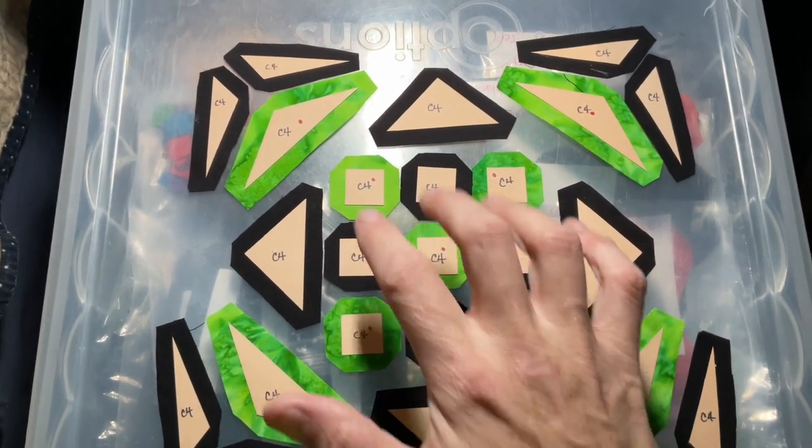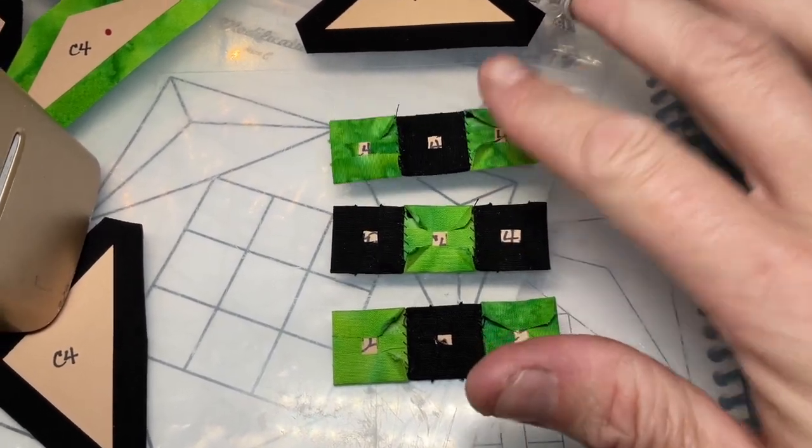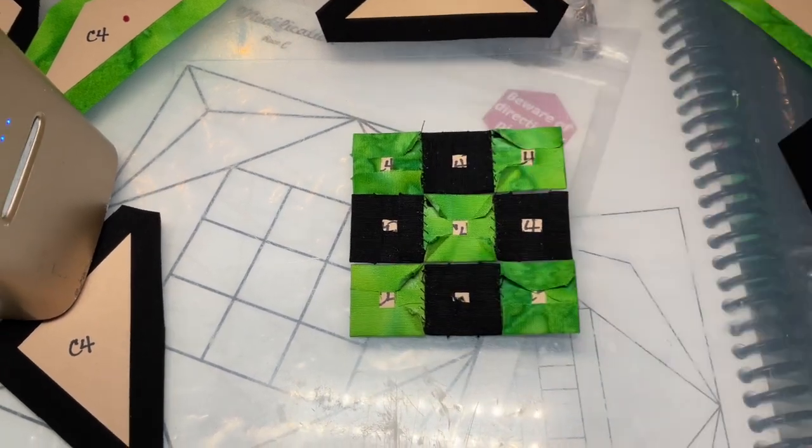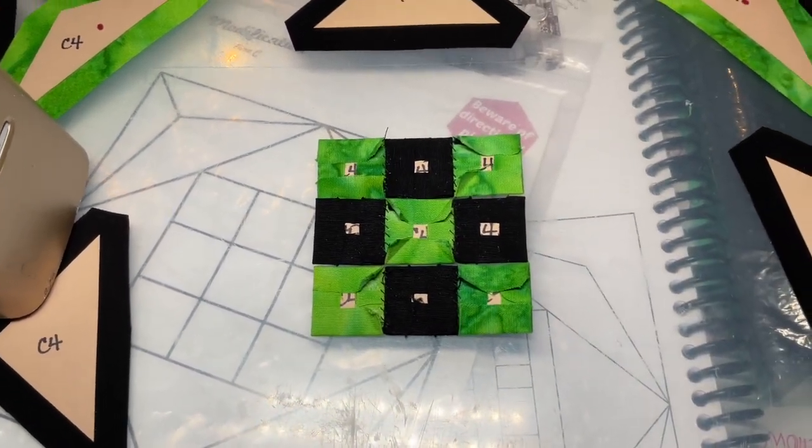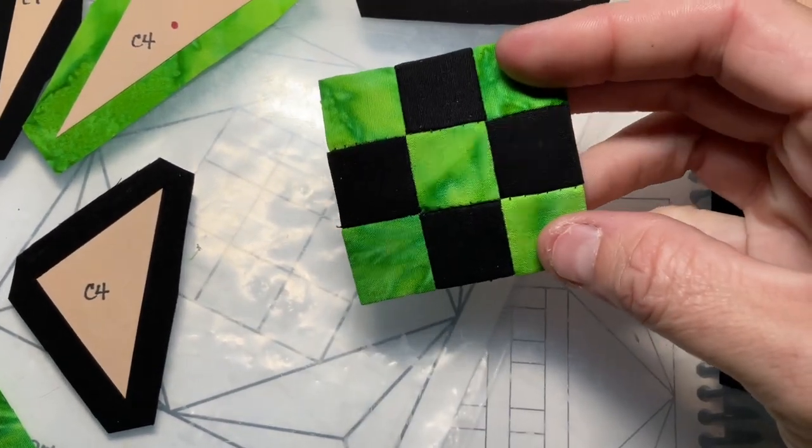I've got all three of the rows formed, and the next thing to do would be to put them together for the square. So I've got all three rows stitched together into my nine-patch.